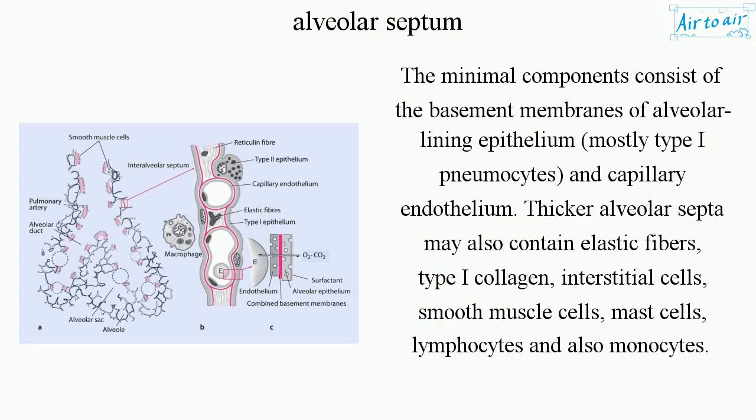Thicker alveolar septa also contain elastic fibers, type I collagen, interstitial cells, smooth muscle cells, mast cells, lymphocytes, and monocytes.